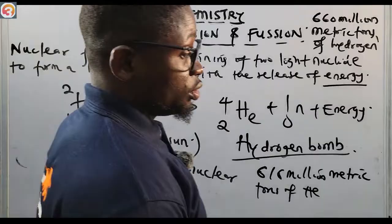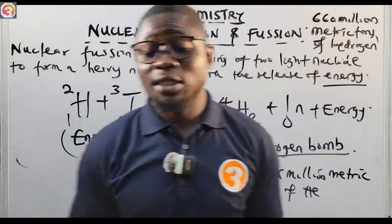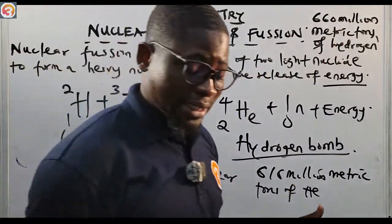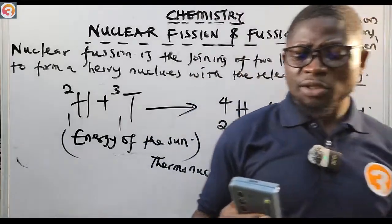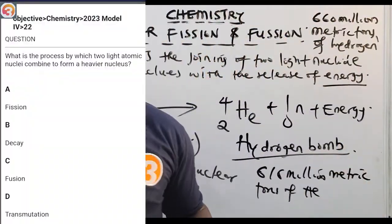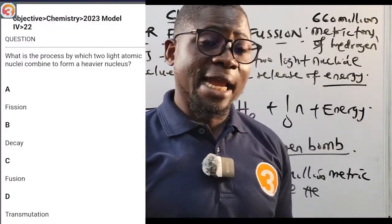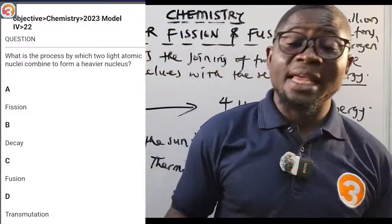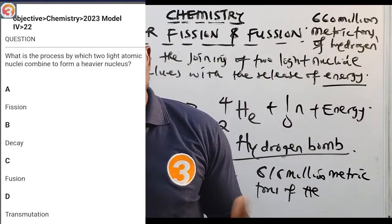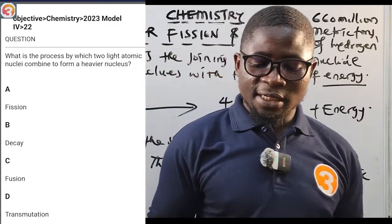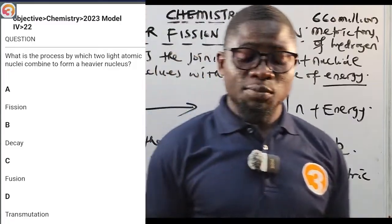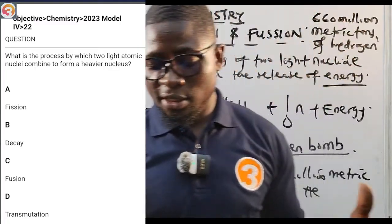Now I'm going to go to the past questions from the O3 School Jam app. The 2023 question number 22 asks: what is the process by which two light atomic nuclei combine to form a heavy nucleus? Options: A — fission, B — decay, C — fusion, D — transmutation. The correct answer is C — fusion.